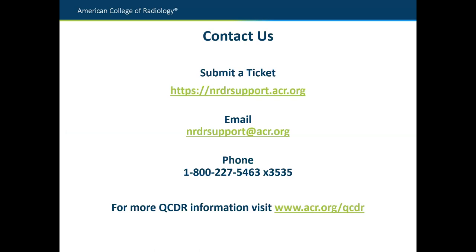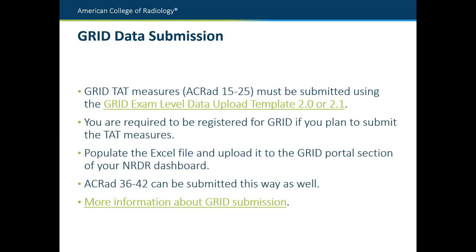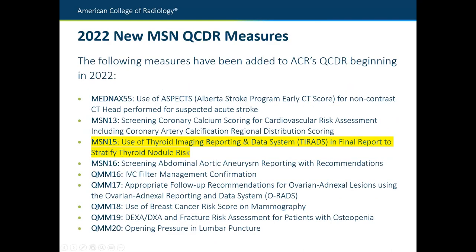Let's do some Q&A. One question is about what users should put in the submission file field for the nine new MSN measures. For MSN measures, you don't have to put a Q in front — it's exactly what you see: MSN 13, MSN 15, and so on. The Q prefix is only for GRID 2.0 measures to differentiate them since they can come from two different sources.